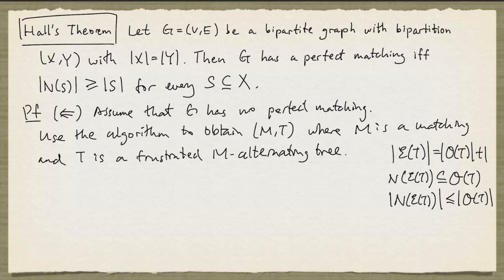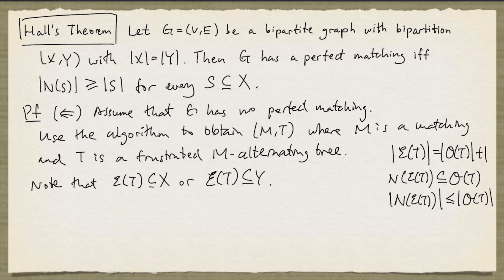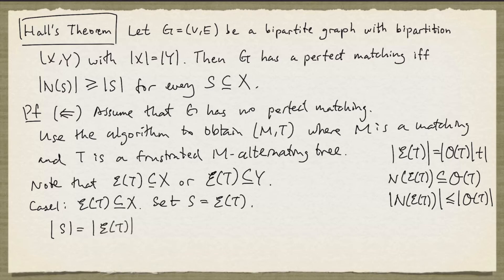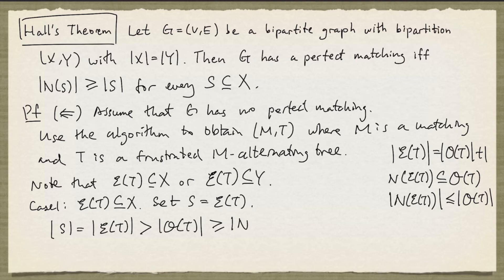There are two possibilities since the even set must lie entirely in one partition of the graph, as it consists of nodes at even distance from the root R. Consider the case when the even set is a subset of X — this is the easier case. We set S to the even set of T. The cardinality of S equals the cardinality of the even set, which is one more than the cardinality of the odd set. Using our inequality, this is at least the cardinality of the neighbor set of the even set, which equals the neighbor set of S. So we have found our desired S.